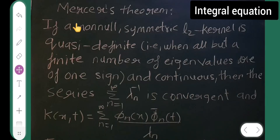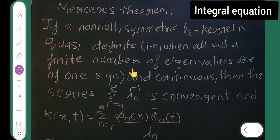Next is Mercer's theorem. If a non-null symmetric L2 kernel is causative finite — now what is causative finite? It means when all but a finite number of eigenvalues are of one sign. That is causative finite.